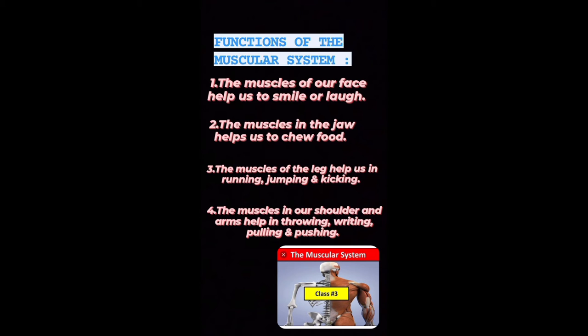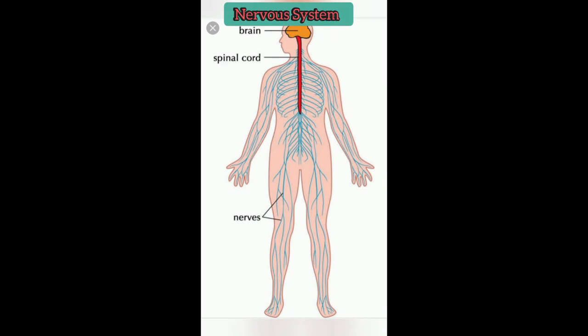The next topic we have is the nervous system. The nervous system consists of the brain, the spinal cord and the nerves. Our five sense organs are also part of the nervous system. Our brain is the controlling center of all our body functions like breathing, running, jumping and thinking.